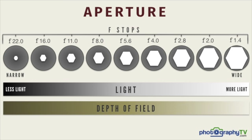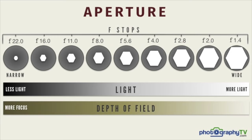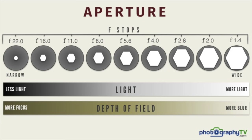Going back to our diagram: at f22, we're letting in a little bit of light, but the depth of field is greater — there's a lot more in focus. If you take a shot of me, you'll see me and also the trees in focus behind me because f22 has a great depth of field. On the other end of the spectrum, at f1.4, it's a very small depth of field, so there's not a lot in focus — this is how you get that blurred effect. With that same example, I would be in focus at f1.4, but the trees in the background would be completely blurred out because of that very small depth of field.